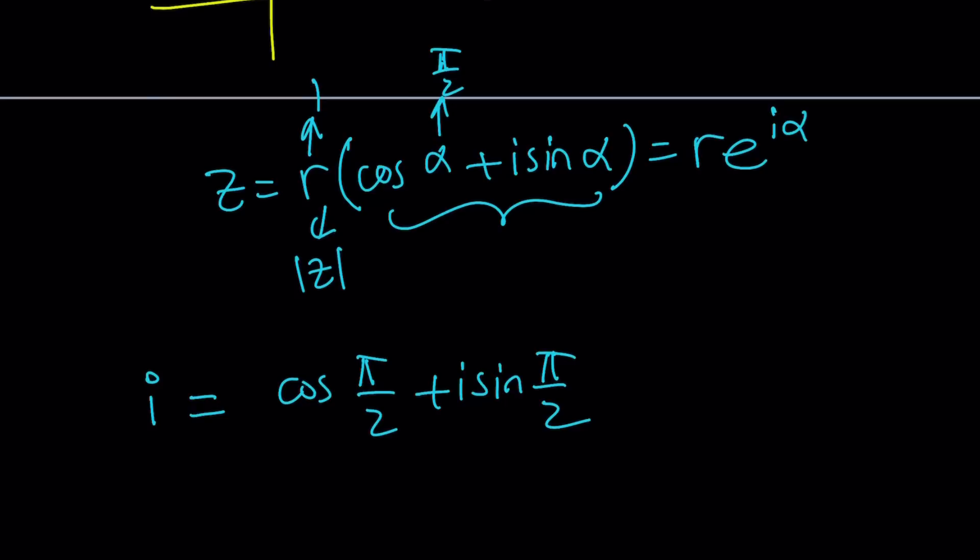This is a beautiful formula, and we can basically write this as r is 1, so it's going to be e to the power i times pi over 2. Some people are going to write it e to the power pi over 2i. It doesn't matter, same thing.